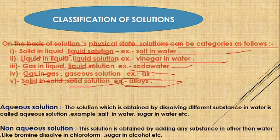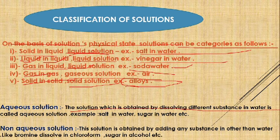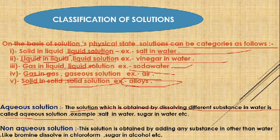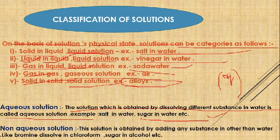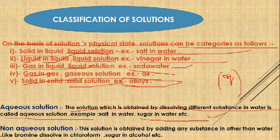Another classification of solution is aqueous and non-aqueous solution. An aqueous solution is one obtained by dissolving a substance in water — like salt in water or sugar in water. We use the symbol (aq) for aqueous solutions. A non-aqueous solution is obtained by dissolving a substance in a solvent other than water.